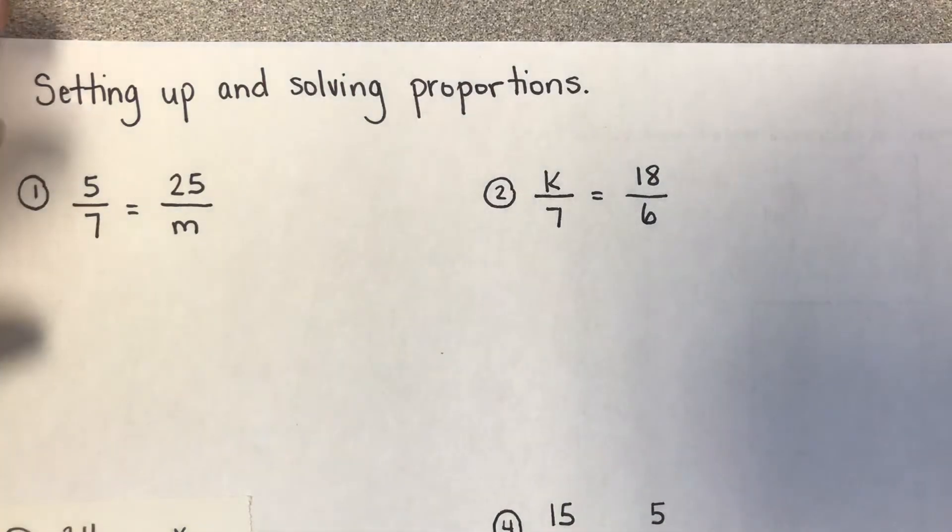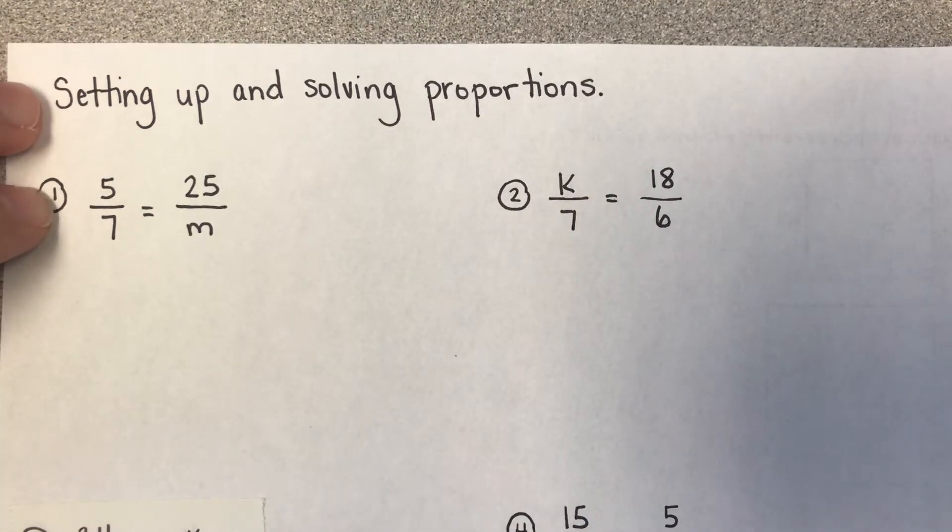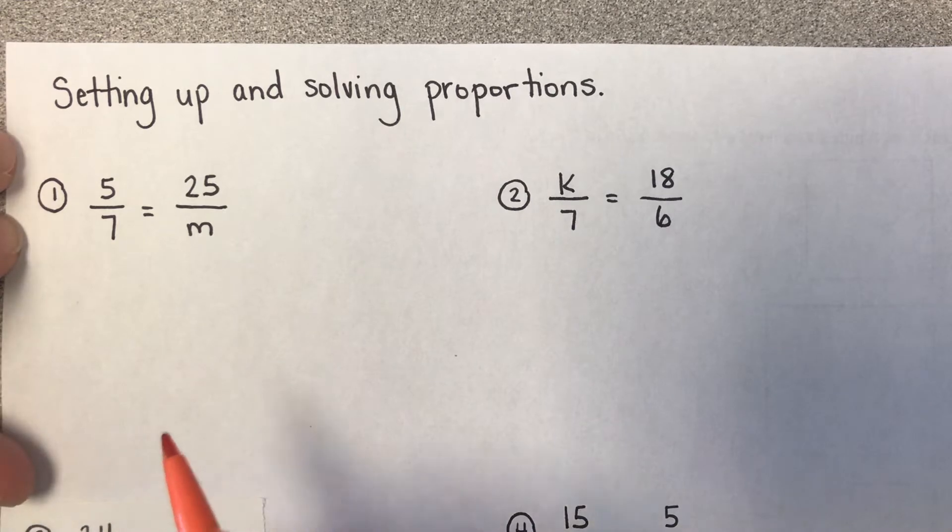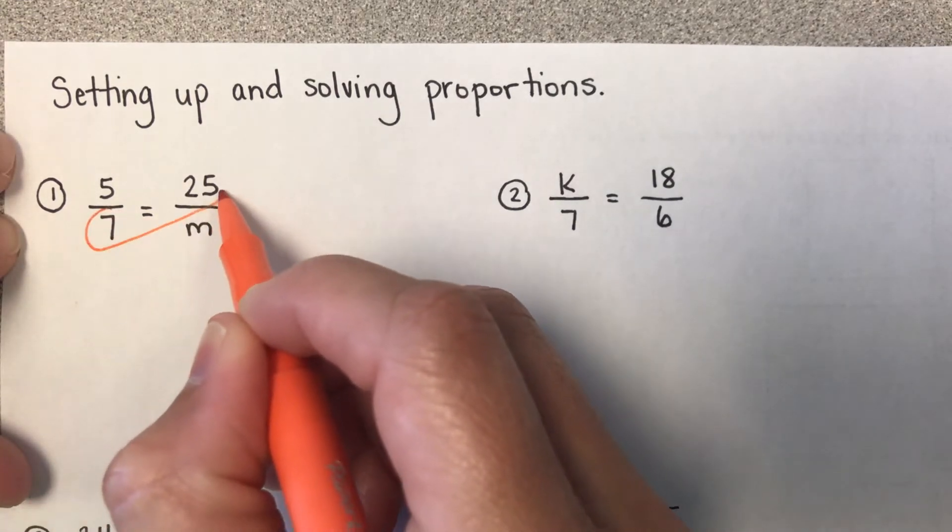So with the proportion, we've set it up. The problem already gave it to me like this. Sometimes you'll have to set it up if you're given a word problem, but that's for a later video. So for this one, all you do is you've got to start off by cross-multiplying.